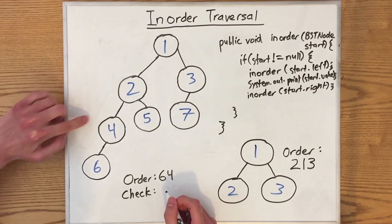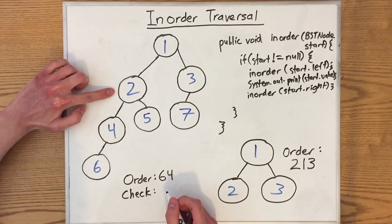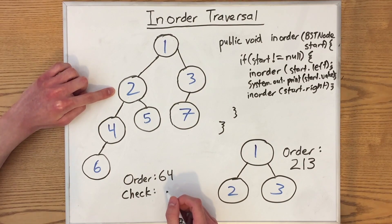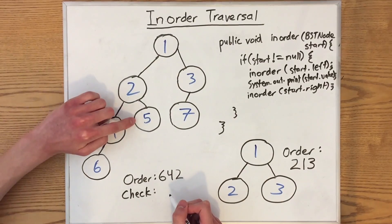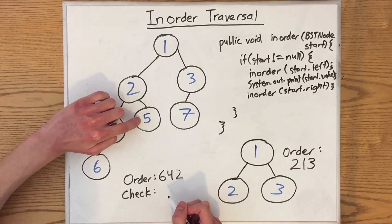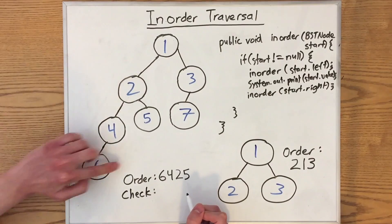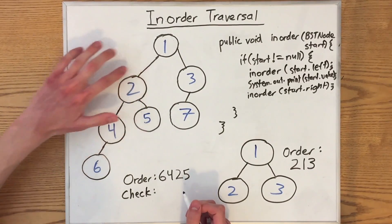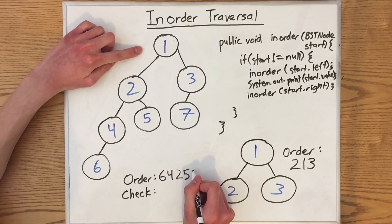We go up into here. This subtree was the left subtree for the tree rooted at this node. This means we can now print this node's value, which is 2. Then we call inorder recursively on its right subtree. Since it's a single node, it's 5. That means this entire tree is now done. Since the left subtree of our overall tree is done, we can print out the overall root value, which is 1.